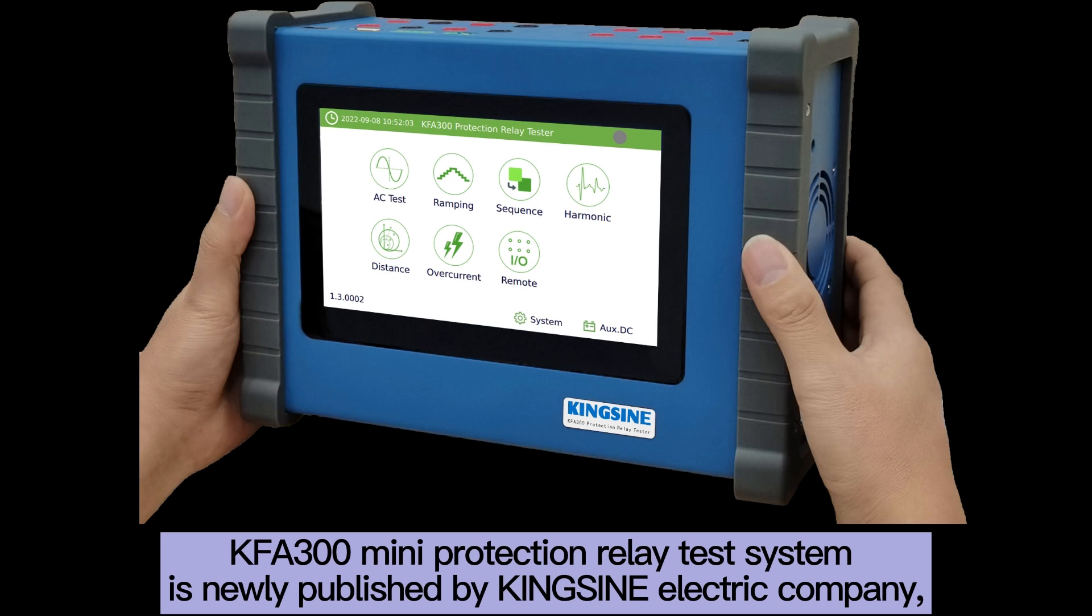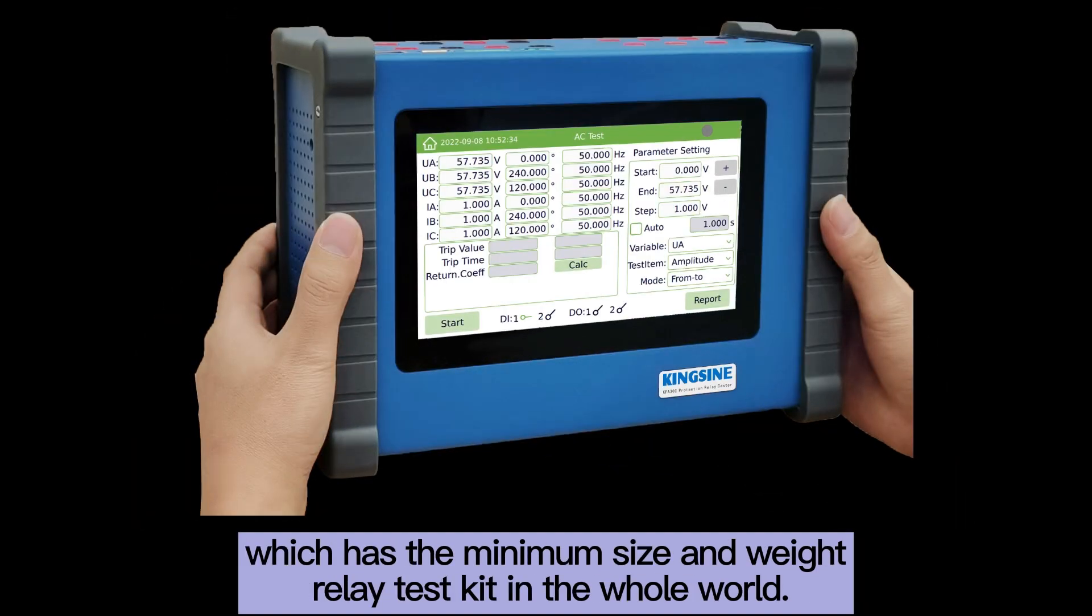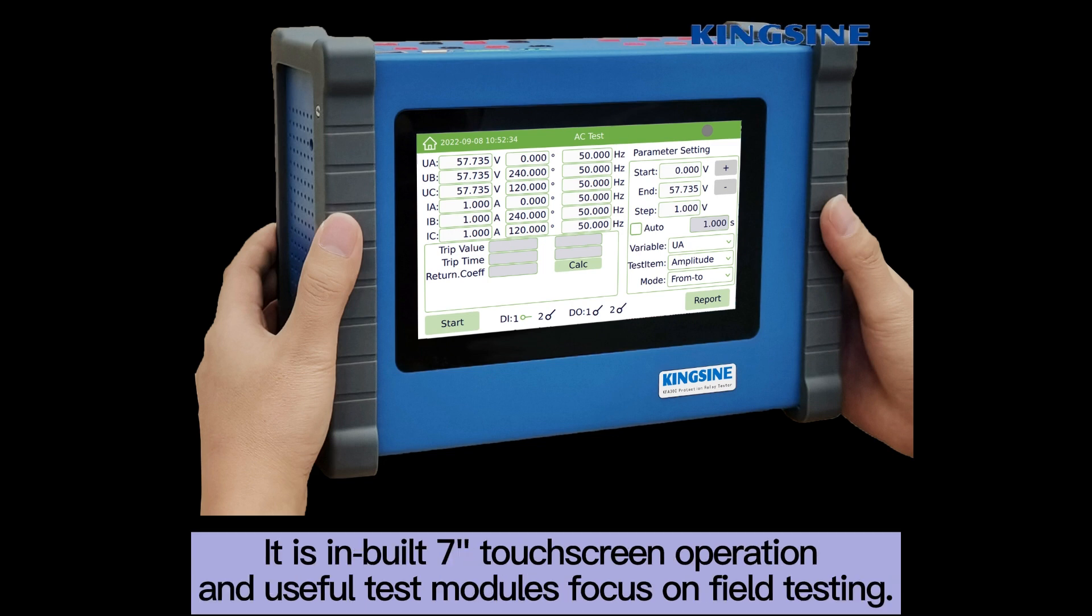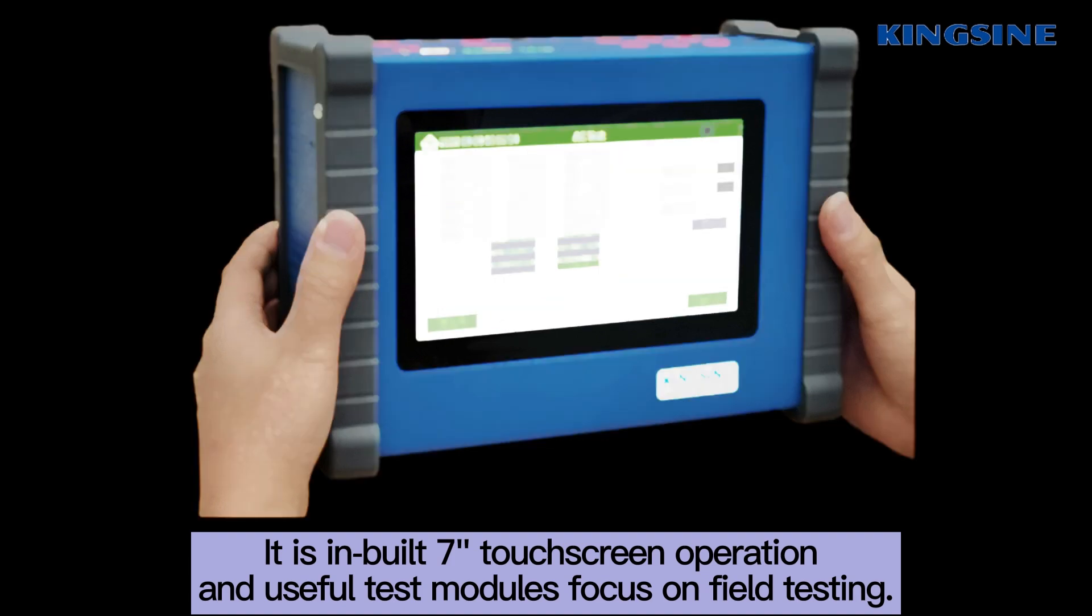KF300 Mini Protection Relay Test System is newly published by Kingston Electric Company, which has the minimum size and weight relay test kit in the whole world. It is in-built 7-inch touchscreen operation and useful test modules focus on field testing.